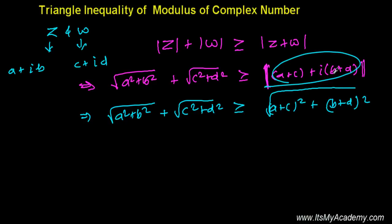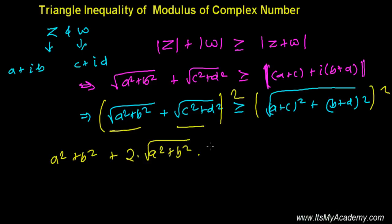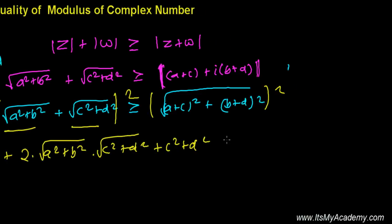Now let's square both sides. Squaring the left side — applying the (a + b)² formula — gives a² + 2ab + b²... that's the expansion. The right-hand side becomes (a + c)² + (b + d)².